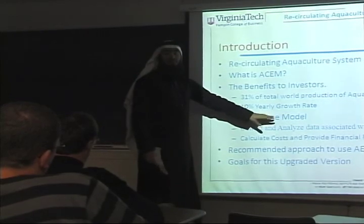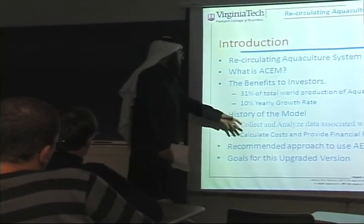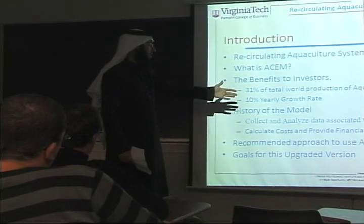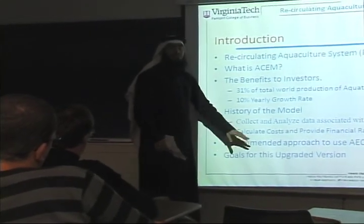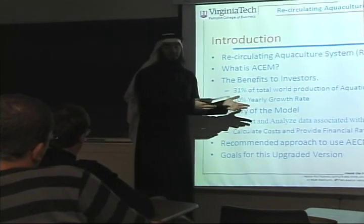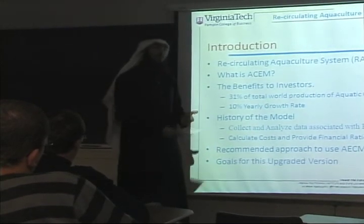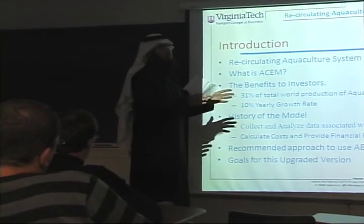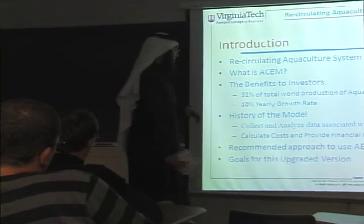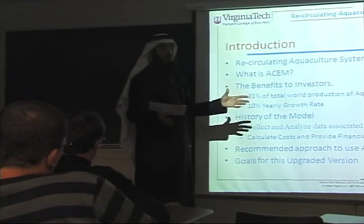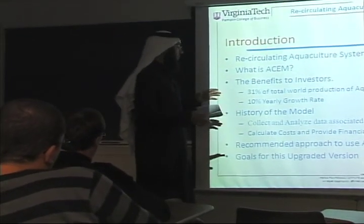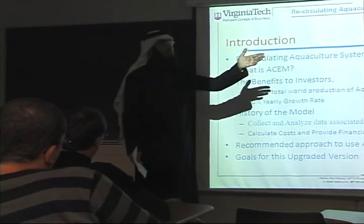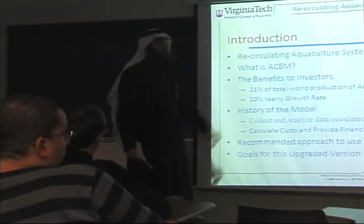The history of the model: it began in the late 1990s, collecting and analyzing data associated with the RAS system. It calculates costs and provides financial ratios. To use the system, you need at least two people — a financial advisor and an agricultural analyst — to help input the needed information. For this version, we worked for at most three months, focusing our attention on reducing errors and improving certain components.